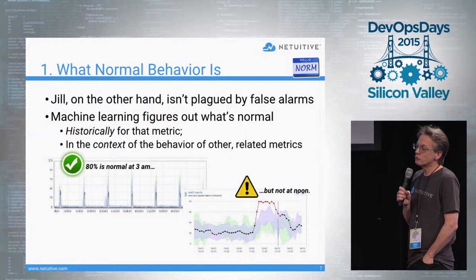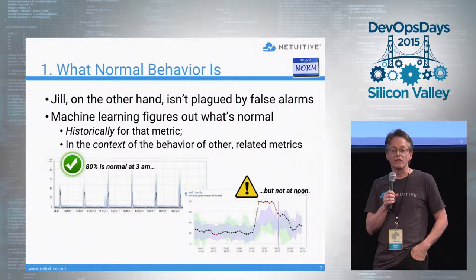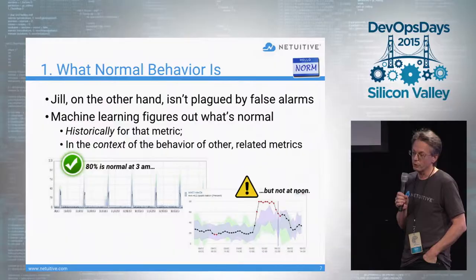Jill, on the other hand, is not getting false alarms. She has software with machine learning that figures out what's normal for her metrics, both historically as well as in the context of other related metrics. And then alarms can be generated that allow her to respond quickly.